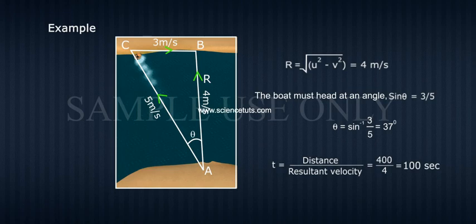And time taken to cross is t equals distance divided by resultant velocity, which equals 400 divided by 4, equals 100 seconds.